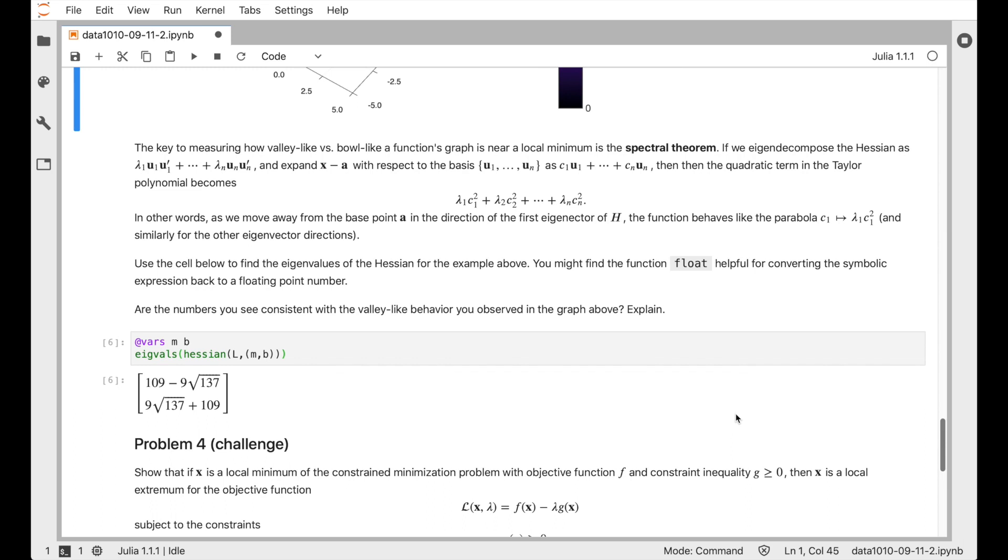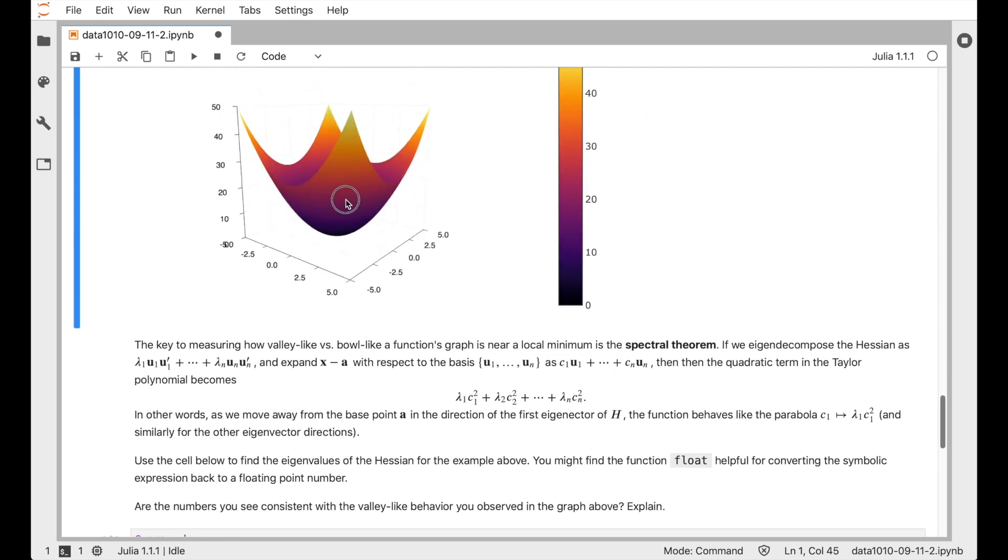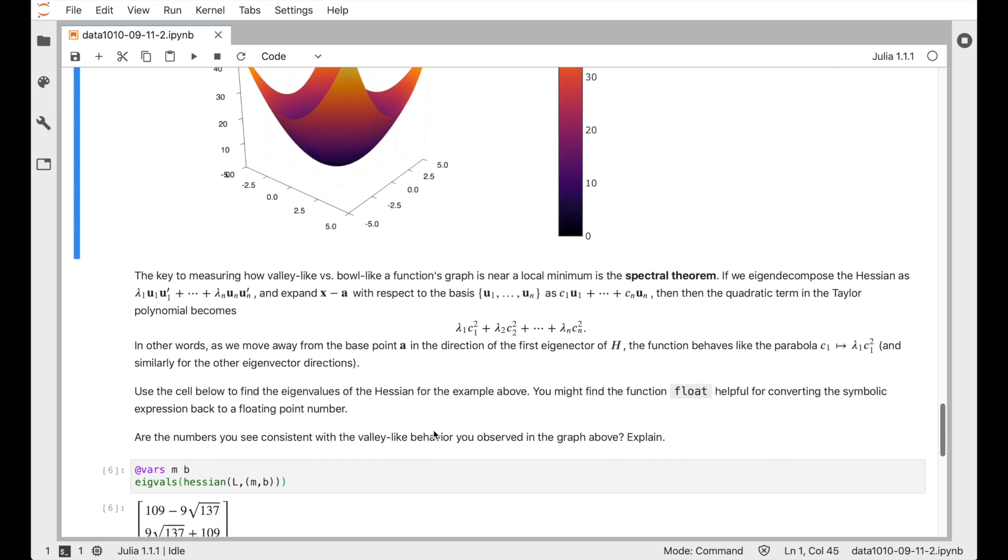So the key idea for determining that behavior is to use the spectral theorem. So the idea is, let's take the Hessian and expand it according to its eigen decomposition. We know that exists because the Hessian is going to be a symmetric matrix. So not only does the eigen decomposition exist, but the vectors are going to be orthonormal. So we can write the Hessian out as lambda 1 times u1 times u1 transpose where u1 is the first eigenvector and lambda 1 is the first eigenvalue and so on, adding up terms for all the eigenvectors until we get to the last one.